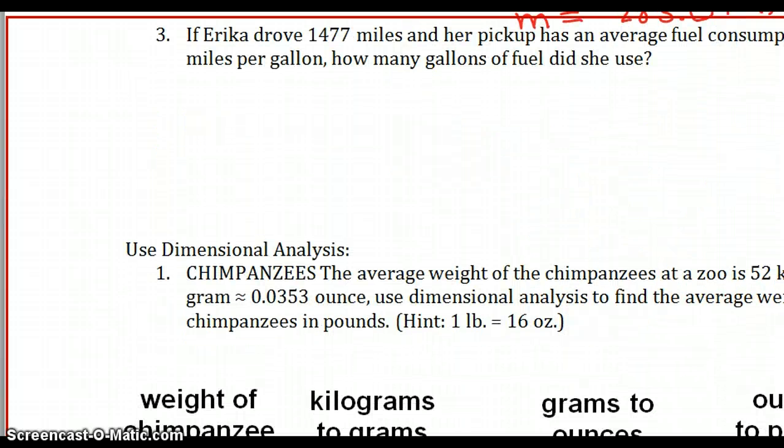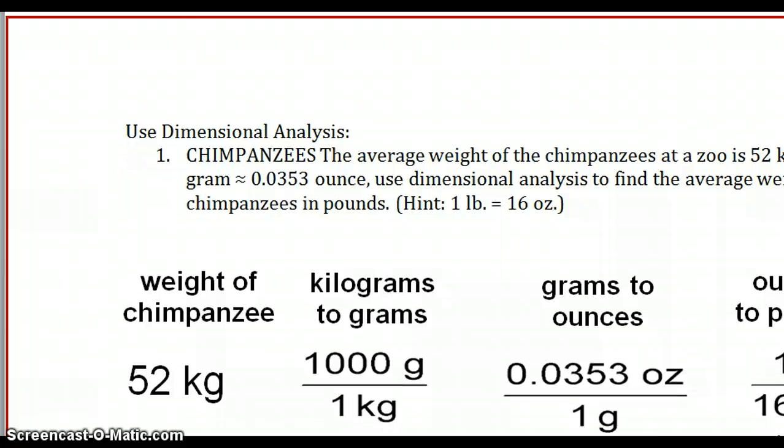I'm going to leave number three for you to work. It's using that same formula. But this time, you're going to know how far she traveled and her miles per gallon. You're going to be looking for G, how many gallons of fuel did she use. I'm going to check that tomorrow.